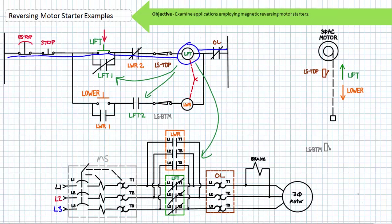As the door opens, note the normally closed bottom limit switch being held open returns to its deactivated closed state once the tag stops triggering it. An operator can now release the momentary contact lift push button and the spring return will return it to its normally open deactivated state. The now closed lift 1 holding contact maintains the energized state of the lift contactor coil, meaning the primary lift contactor stays closed and the motor continues opening the door. That's the point of the holding circuit — it maintains the last asserted state.